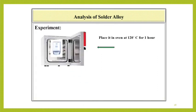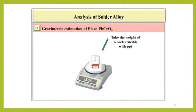Then, dry the precipitate of PbCrO4 in an oven at about 120 degree centigrade for 1 hour. Weigh the gooch crucible and find the weight of PbCrO4. Repeat the operation of heating and cooling till constant weight is obtained.